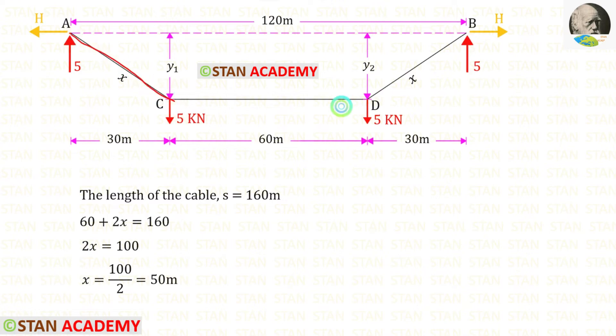So, x plus x, that will be 2x plus 60, that should be equal to 160. We can take 60 on the other side. 160 minus 60, we will get 100. Then, we can take this 2 on the other side. It will come in the denominator. In this way, we can find x which is 50 meters.